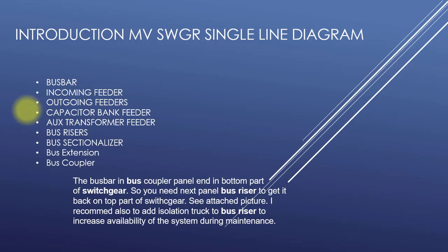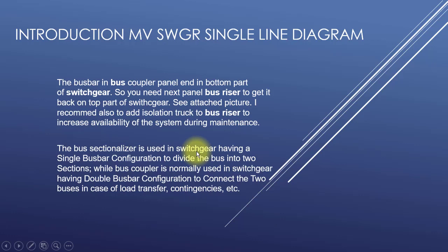There are outgoing feeders feeding the load. In a substation there is also a capacitor bank feeder and auxiliary transformer feeder. Bus risers are used to bring the bus from the bottom part of the switchgear to the top part of the next panel, and it is recommended to add an isolation truck to the bus riser to increase system availability during maintenance. A bus sectionalizer is used when you have a single bus bar and want to divide it into two parts, while a coupler is used in a double bus bar scheme to connect two buses together.